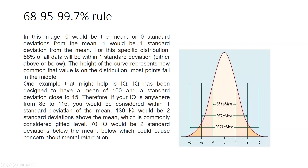The height of the curve represents how common that value is in the distribution — how many times it falls in this distribution. Most points fall in the middle. A good example is IQ: IQ has been designed to have a mean of 100 and a standard deviation close to 15.